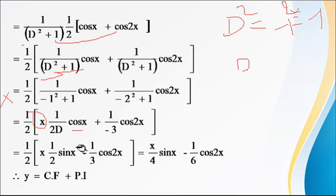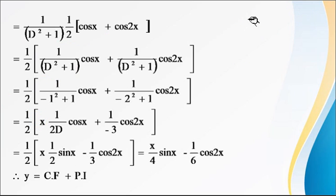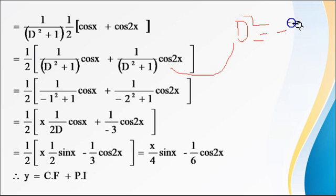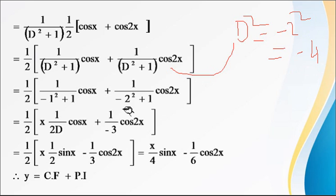For the second term, a = 2, so replace D² with −2² = −4. The denominator becomes −4+1 = −3, giving cos(2x)/(−3). Combining: the PI = ½ · [x·sin(x)/(2) − cos(2x)/3] = x·sin(x)/4 − cos(2x)/6. Therefore, the general solution is y = CF + PI.